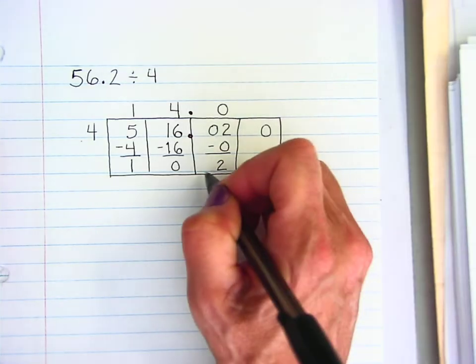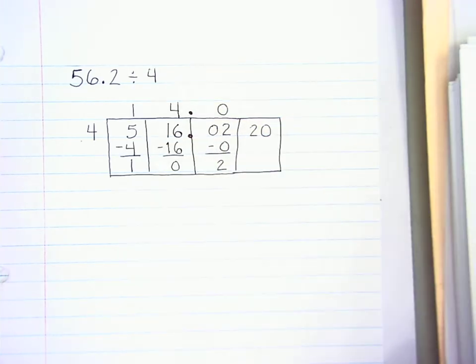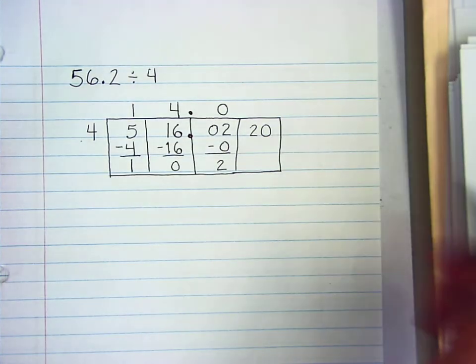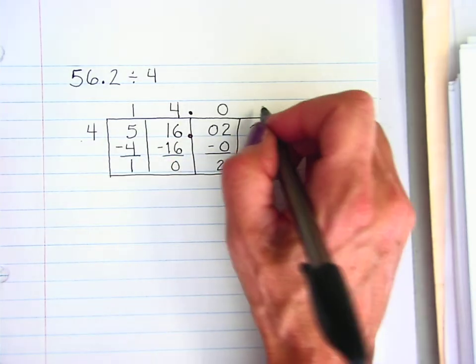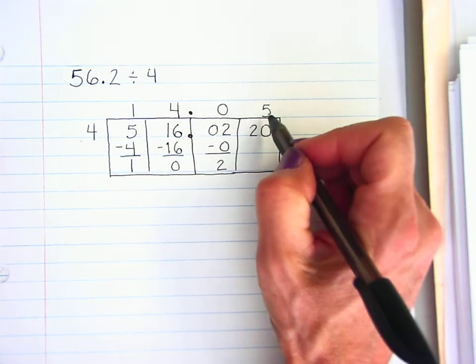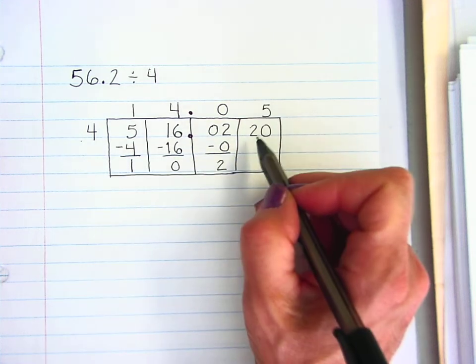And then I'm going to bring that 2 up into that box. Now I can divide. 4 goes into 20, 5 times. 4 times 5 is 20.